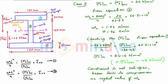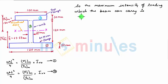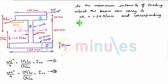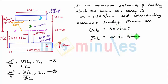So we neglect the value of w2. The maximum intensity of loading which the beam can carry is w1 = 1.375 newton per mm. The corresponding maximum bending stresses are: σc_max = 45 N/mm² and σt_max induced = 20.96 N/mm². So the problem is solved.